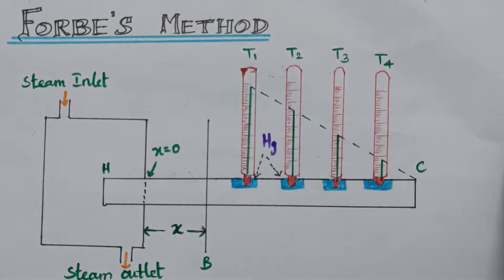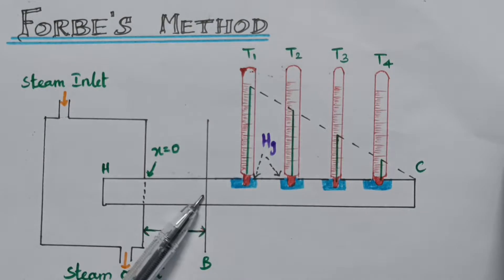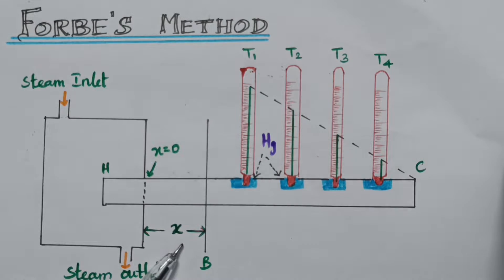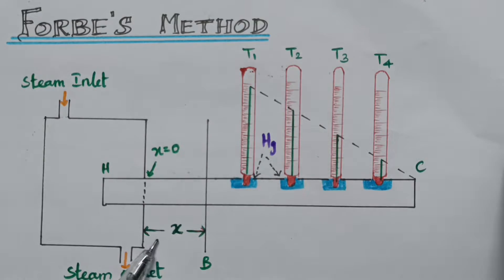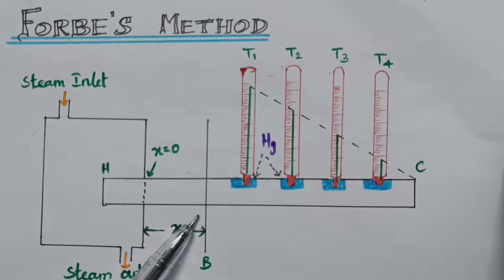We have to find the amount of heat flowing per second across the cross-section B. Here, x is the distance from the hot end. The amount of heat flowing per second across point B, at a distance x from the hot end, is what we need to calculate.